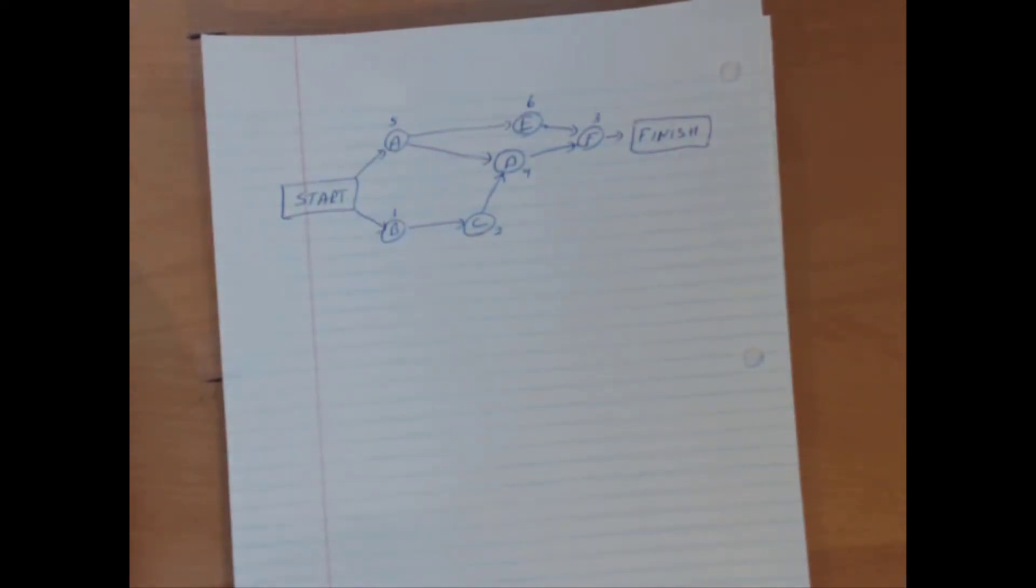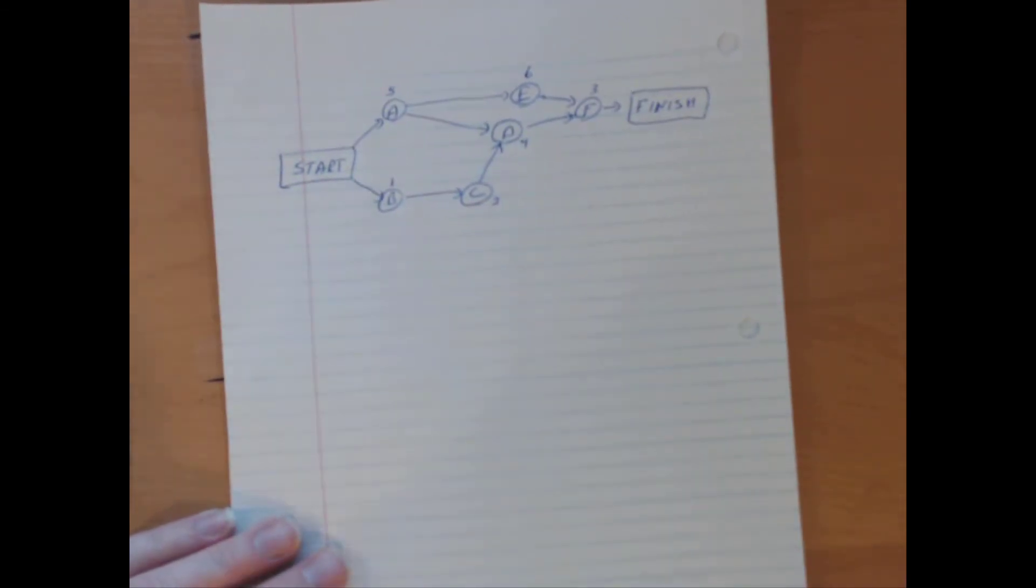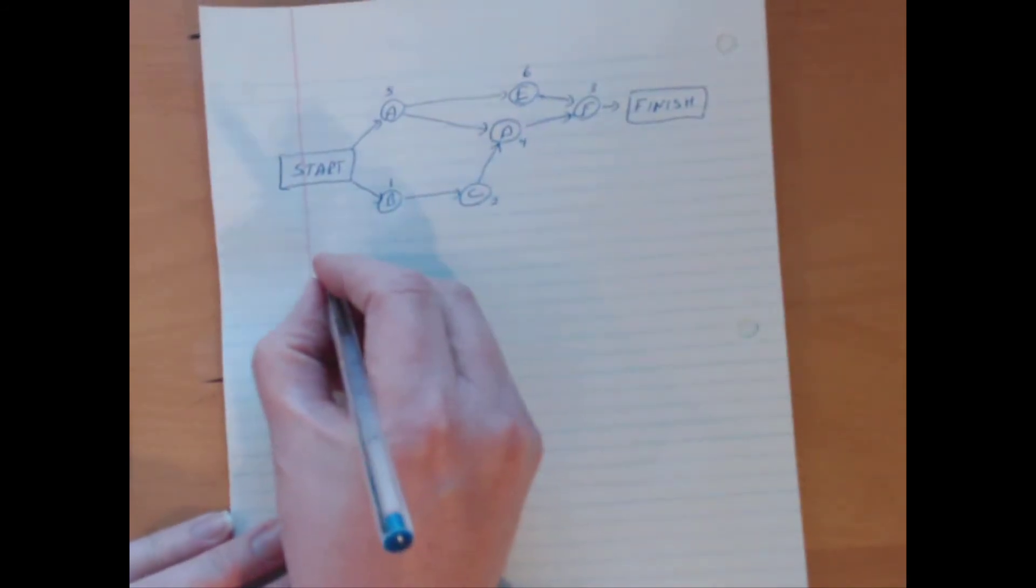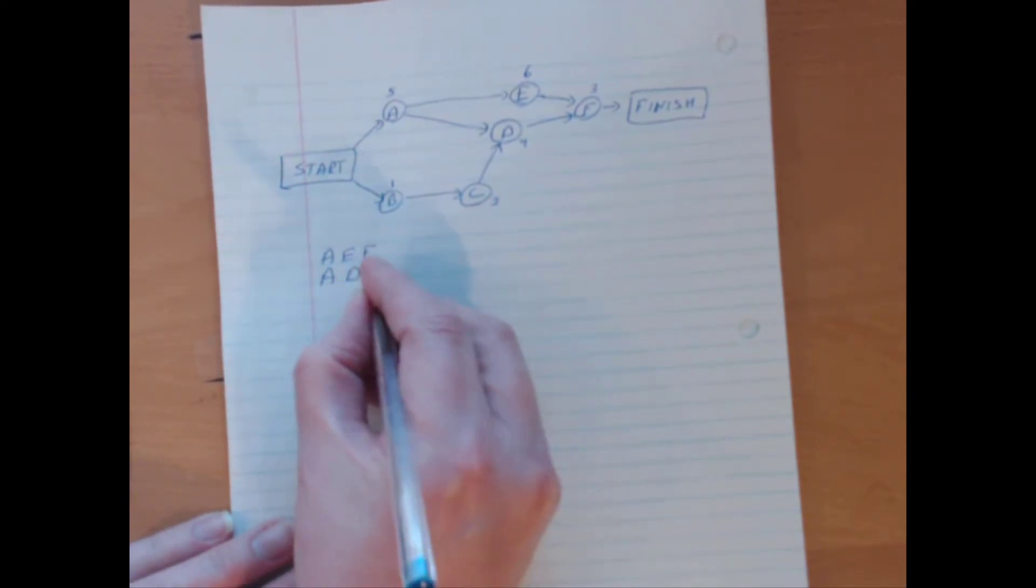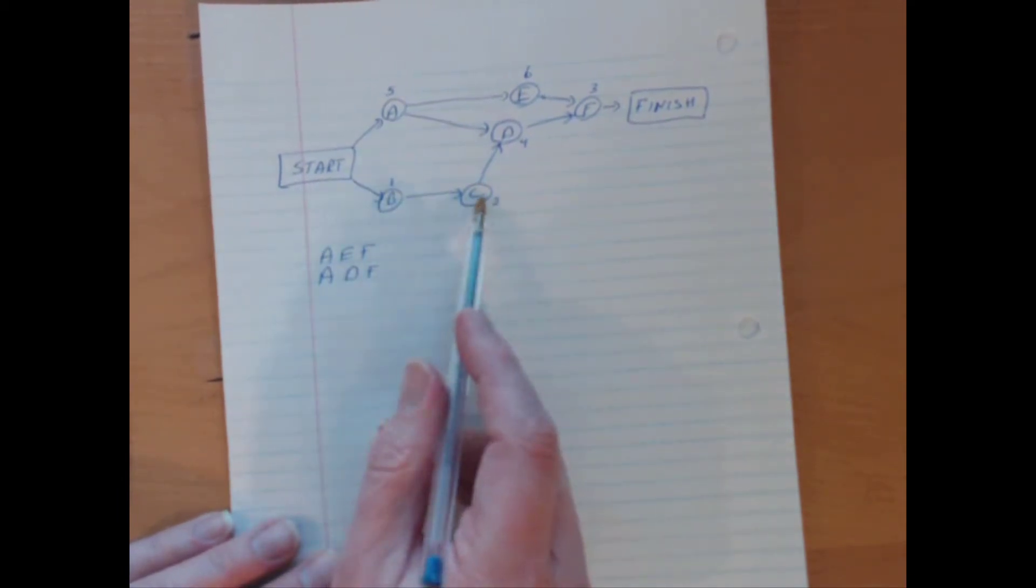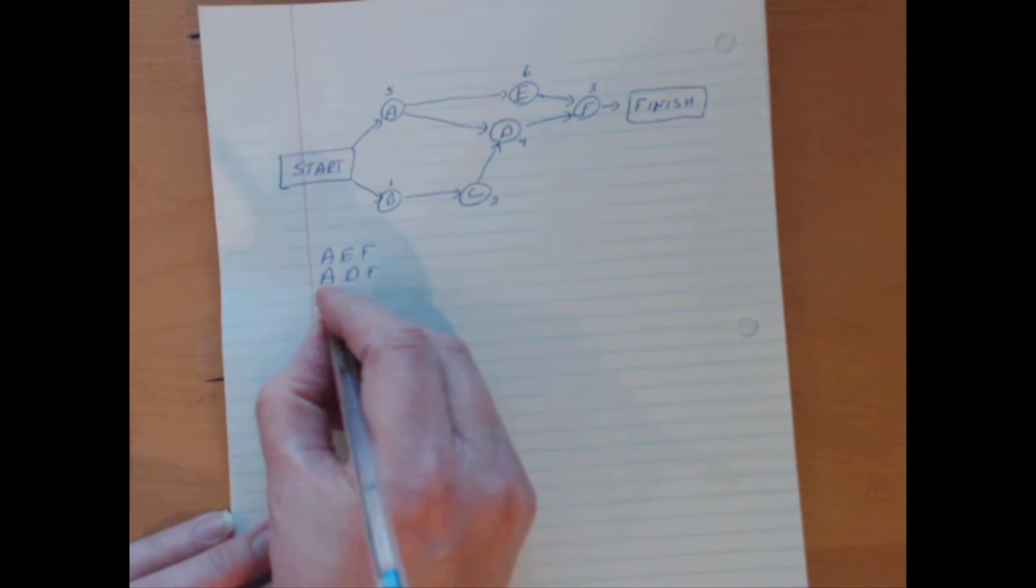And can I determine that fairly quickly? So for critical paths, I can just now think of what's the pathway. A, E, F, let's say. A, D, F. Those are a couple of critical paths. And then I also got the B pathway. B, C, D, F.